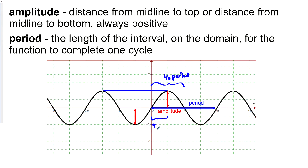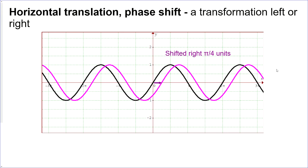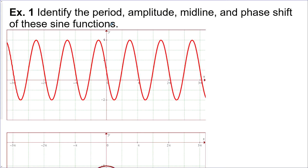Going from the midline up to the maximum is a quarter of the period. The horizontal translation is also called the phase shift — it's just translating the graph right or left. From the graph we want to identify the period, amplitude, midline, and phase shift. For the period, going from maximum to maximum would work but those points aren't on any gridline, so we'd be guessing.